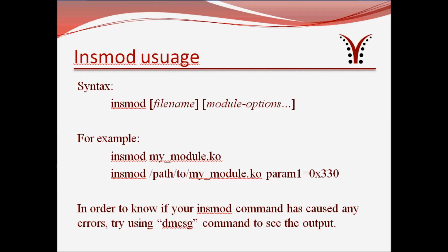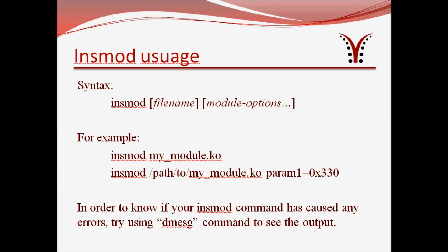Now let's see the syntax of insmod. The syntax is very simple: it's insmod followed by filename followed by module options. For example, insmod my_module.ko inserts a module named my_module into the kernel with no module options. A second example is insmod path/to/my_module.ko param1=0x330, which inserts my_module.ko into the kernel specifying the module option param1=330. Module options are just like command line arguments to a kernel object. We'll discuss more about module options in upcoming sessions. One important point: insmod always accepts one filename at a time.